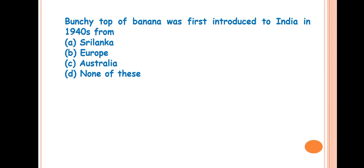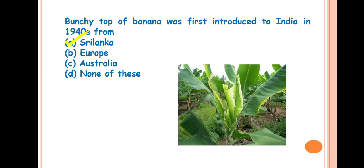Next, Bunchy top of banana was first introduced in India in 1940s from? Answer is Sri Lanka. Bunchy top of banana is caused by a virus, Bunchy top virus, and it was transmitted by aphid Pentalonia nigronervosa. Why is it called Bunchy top of banana? Because on the top, bunch-like leaves are formed.